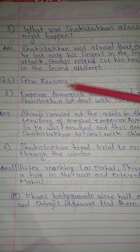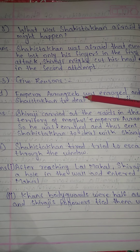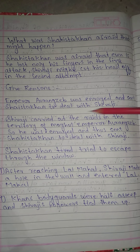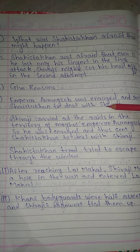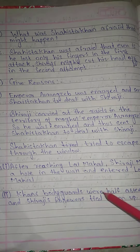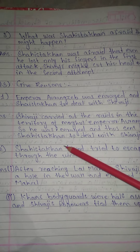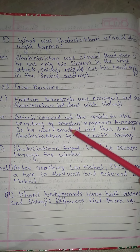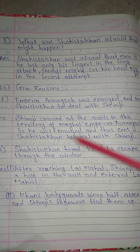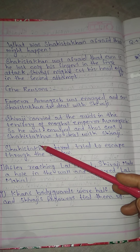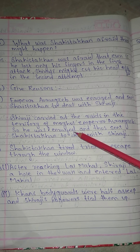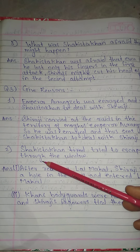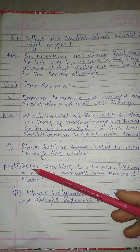Question No. 3: Give reason. No. 1. Emperor Aurangzeb was enraged and sent Shaishta Khan to deal with Shivaji. Answer: Shivaji carried out raids in the territory of Mughal Emperor Aurangzeb, so he was enraged and thus sent Shaishta Khan to deal with Shivaji.